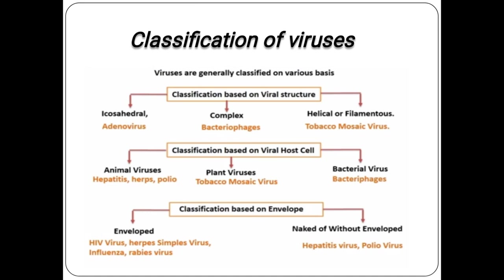Classification of viruses: viruses are generally classified on various bases. Based on morphology, viruses are divided into three types: icosahedral (polyhedral), helical or filamentous, and complex. Icosahedral viruses are also called polyhedral viruses, having 20 faces, each face being an equilateral triangle.